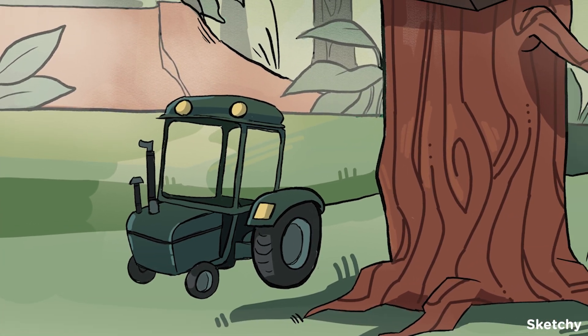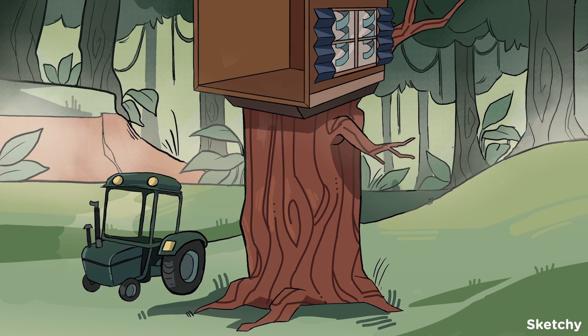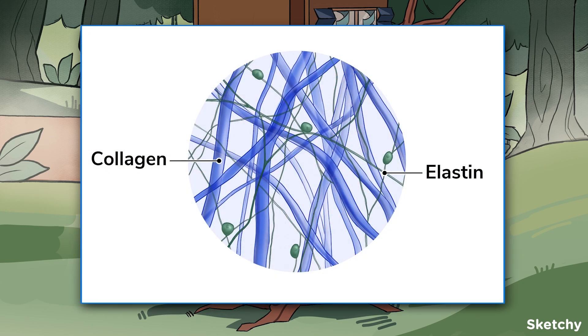Let's get into those structural proteins in a bit more detail. First up, the ones you'll find outside the animal cell membrane. Collagen and elastin are examples of structural proteins found in the extracellular matrix. They're both long fibrous or sheet-like proteins, but they have very different structures.